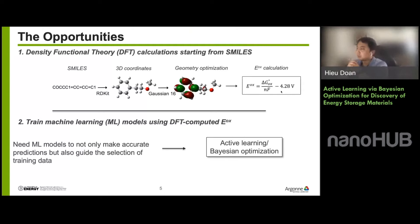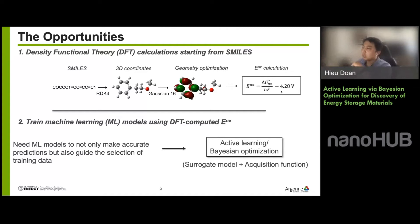For our project we chose a different approach: we want a machine learning model that not only makes accurate predictions but also guides the selection of training data. To achieve this, we employ active learning via Bayesian optimization. In this presentation I'm going to use active learning and Bayesian optimization interchangeably, even though they are not exactly the same. The topic really deserves a whole series of lectures, but given our time limit I'll go quickly over the most important concepts required to understand how Bayesian optimization works.